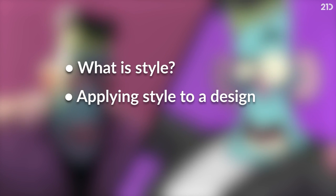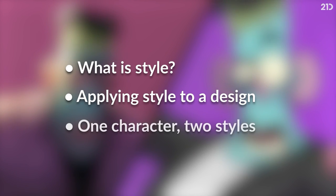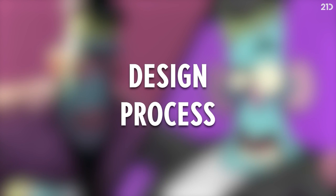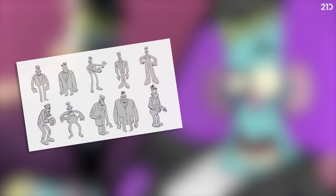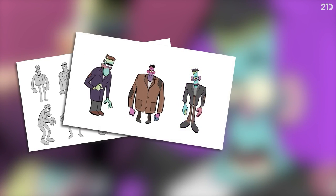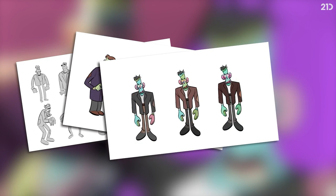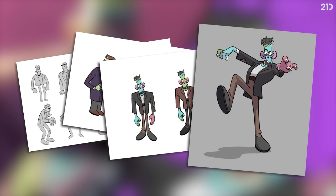Together we're going to explore what style is, what it means to apply style to a design, and then choose a single character to design in two very different styles. We will follow a basic design process comparing the developing characters as we go. Starting with rough sketches we'll explore key design principles such as proportion, silhouette and the use of shape while making design choices suitable for each character style. We'll then progress the successful ideas into some refined concepts, iterating our characters down into a single clear idea. Finally we will progress these ideas into a finished concept piece for each style.